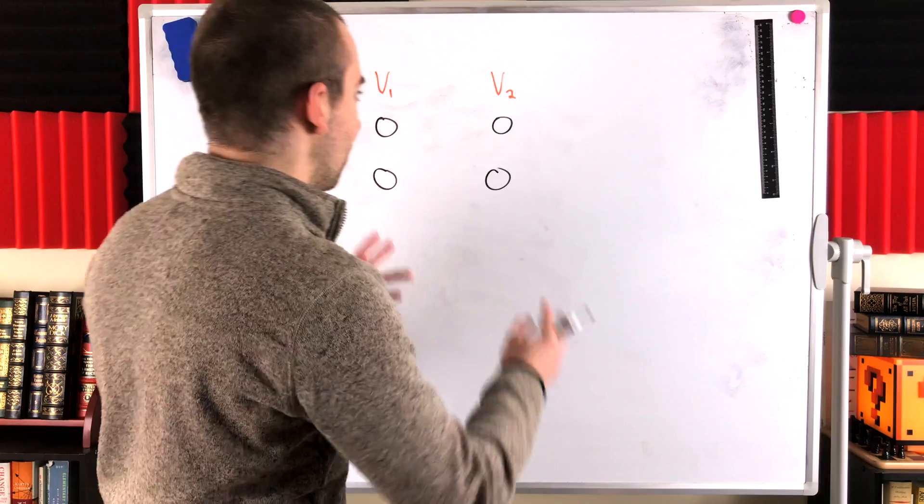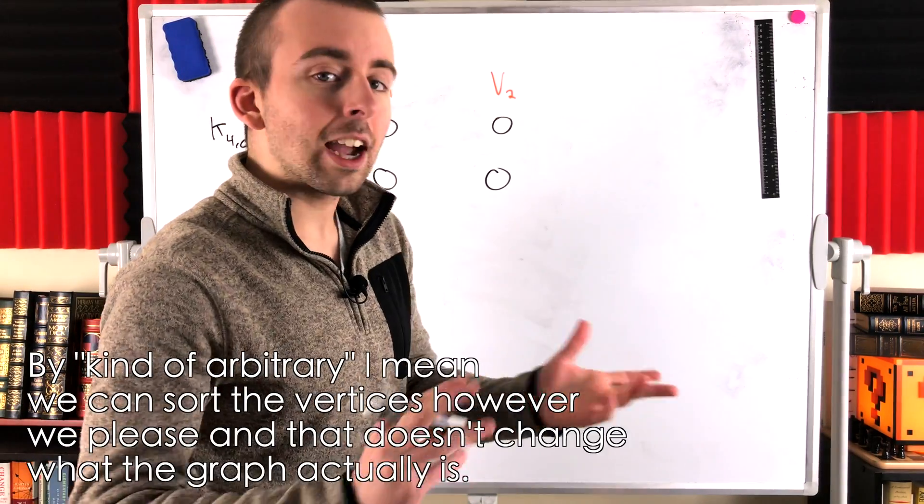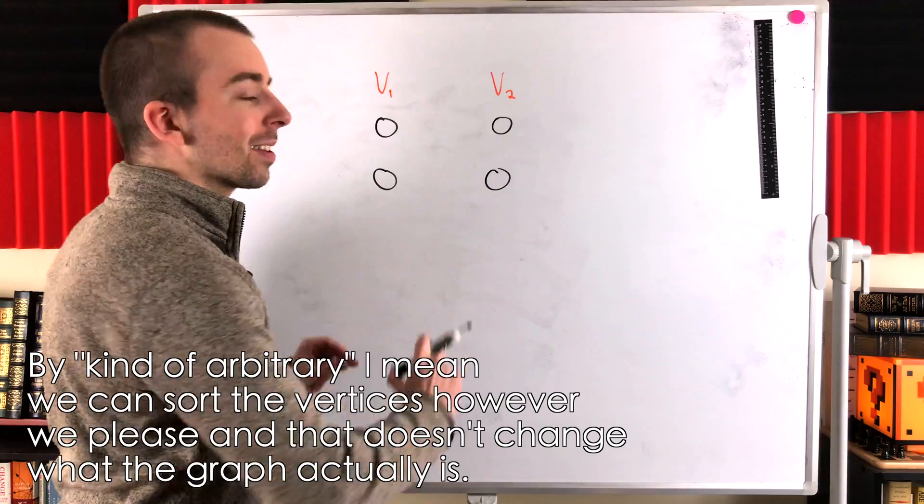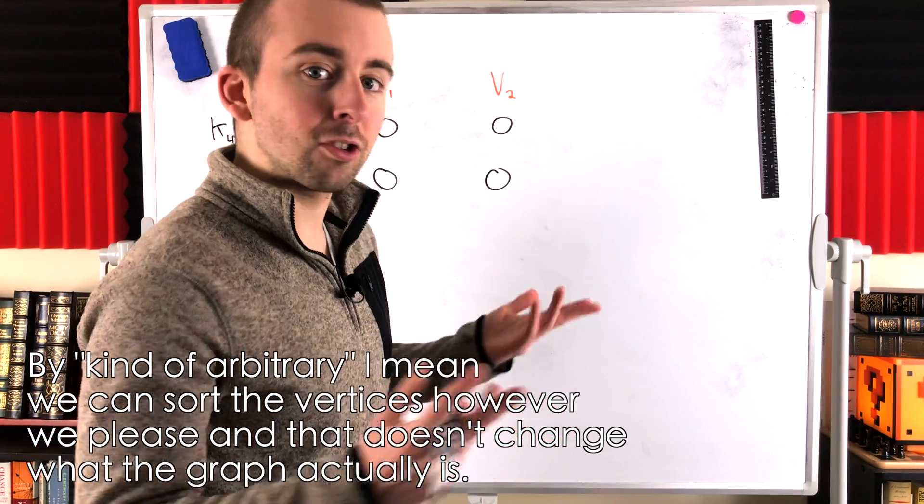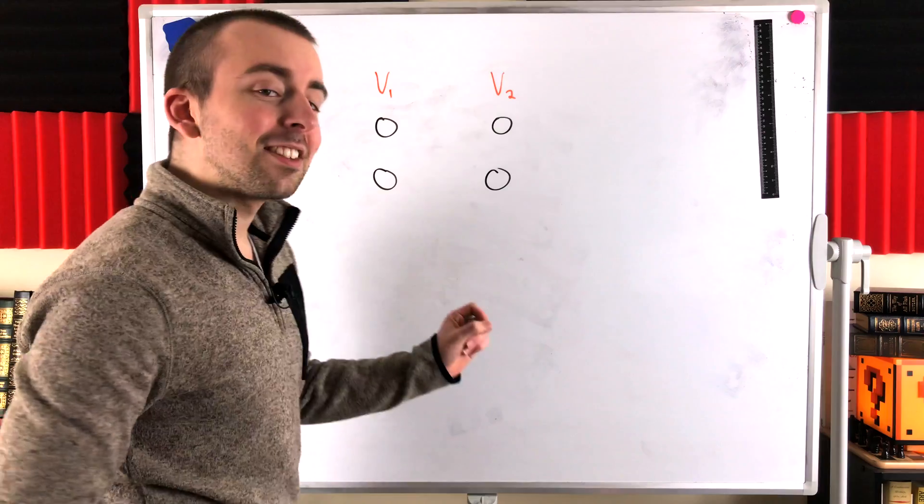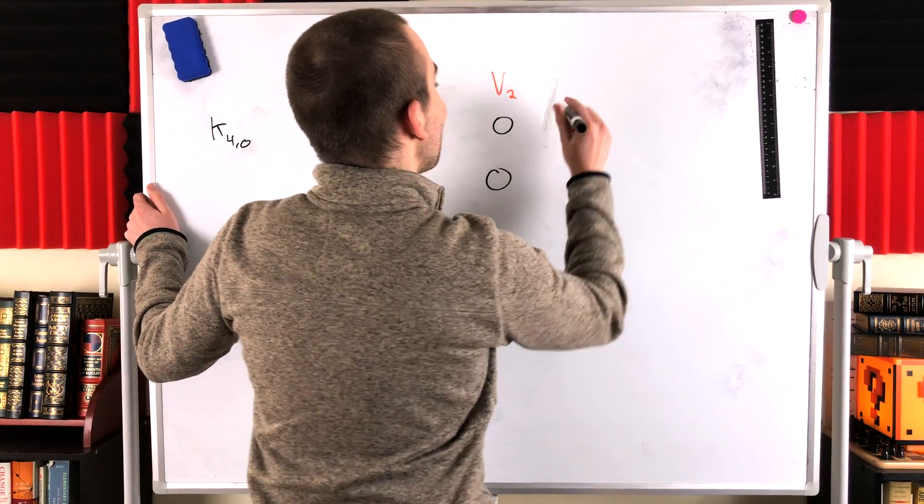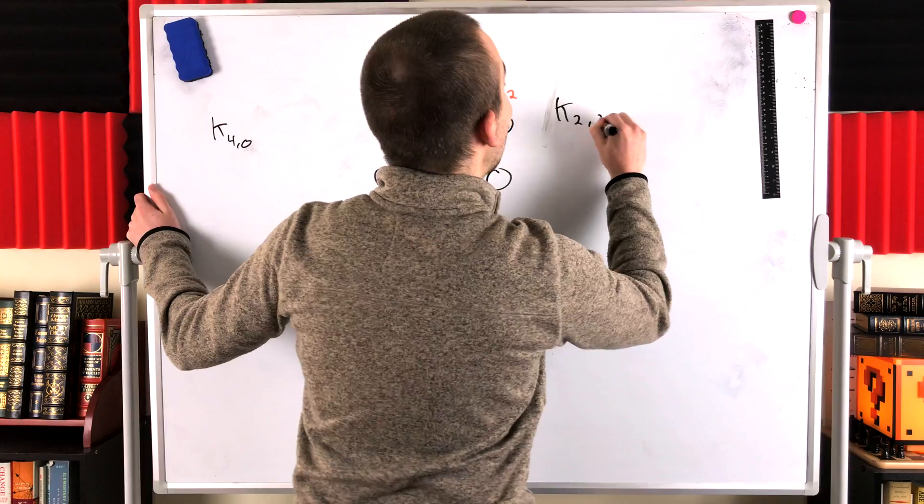But wait a minute. The partite sets we choose to put the vertices in is kind of arbitrary, right? This is the same exact graph we were looking at before. It's just got four isolated vertices. So yes, this is still a complete bipartite graph.